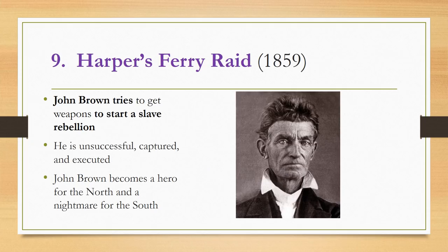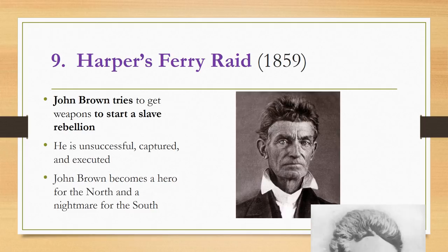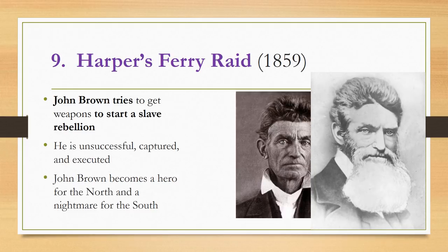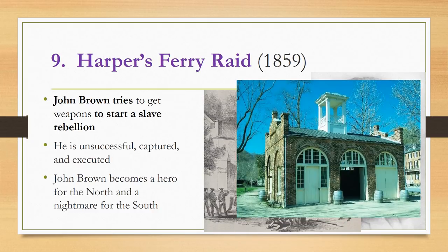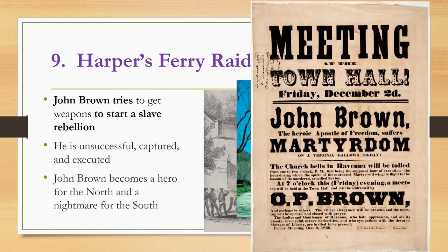You already know about John Brown and the raid on Harpers Ferry, but this was most definitely a step to the Civil War. John Brown was a staunch abolitionist who attempted to arm slaves by raiding the garrison at Harpers Ferry to start a slave rebellion. He was unsuccessful, captured, and executed, but he became a hero and martyr for the north. The south, on the other hand, saw him as a nightmare.